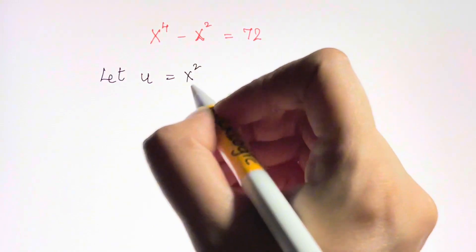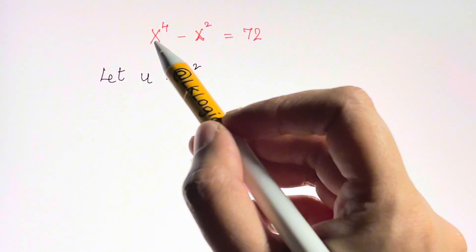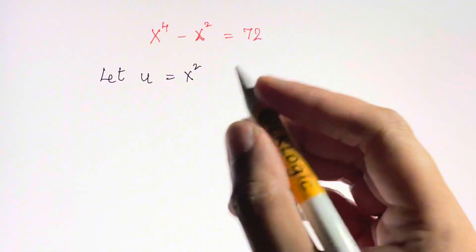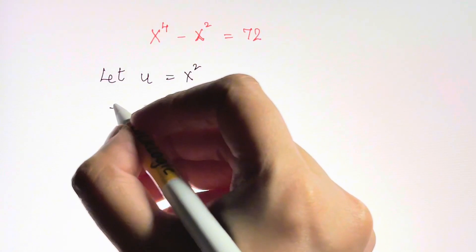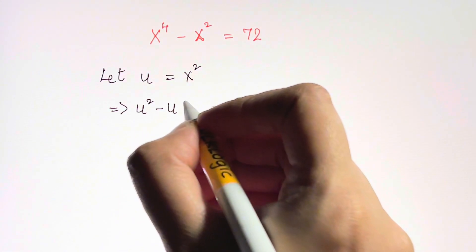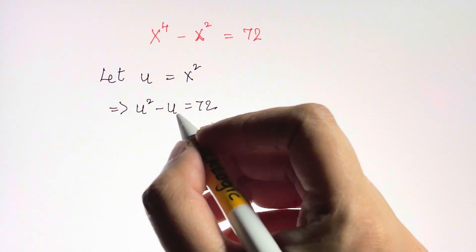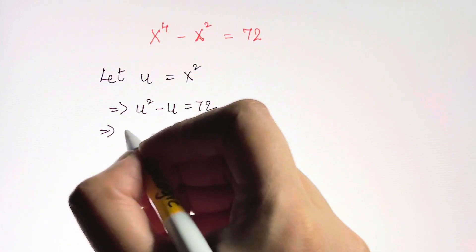Now what we're going to do is substitute in this equation. So that will become u squared minus u is equal to 72. Then bring 72 to the side, you will have u squared minus u minus 72 is equal to 0.